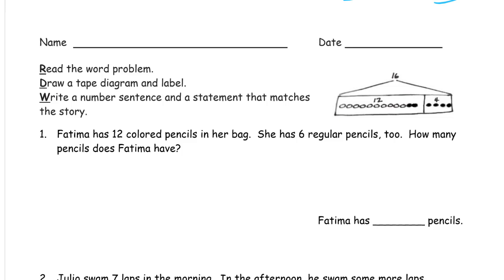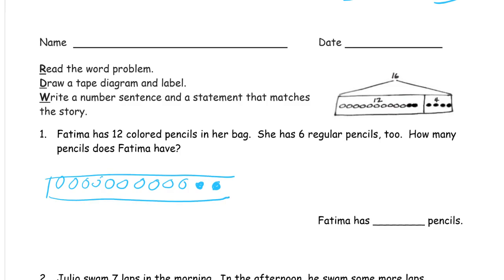I'm going to draw the 12 she has in her bag — 1 through 12. These are the 12 in her bag, and she has 6 regular pencils too — 1 through 6. Six more, and those are regular pencils. Or we could call them colored pencils and regular pencils.